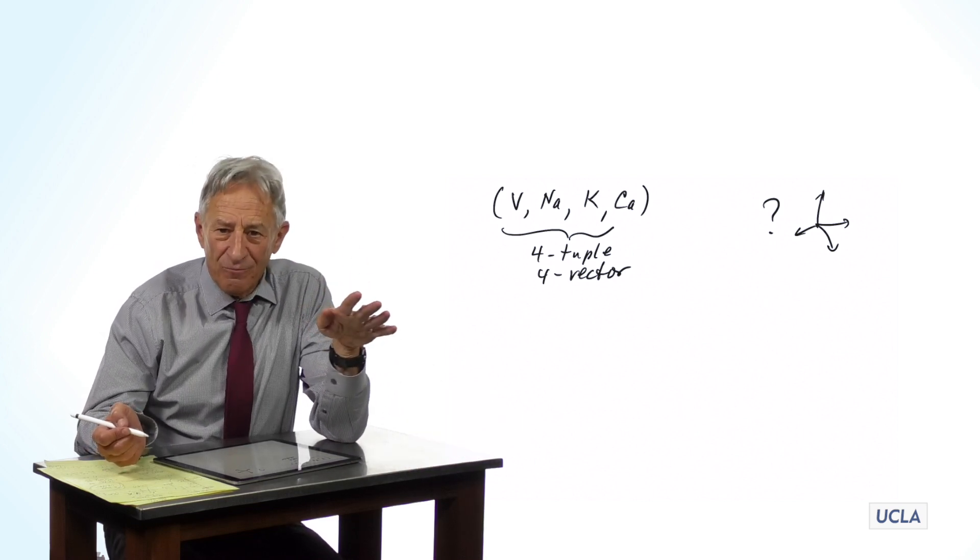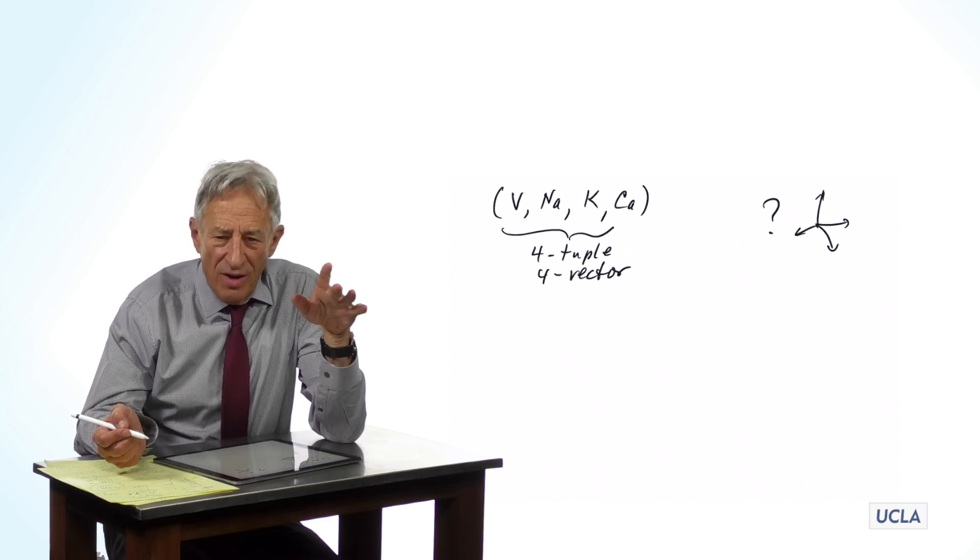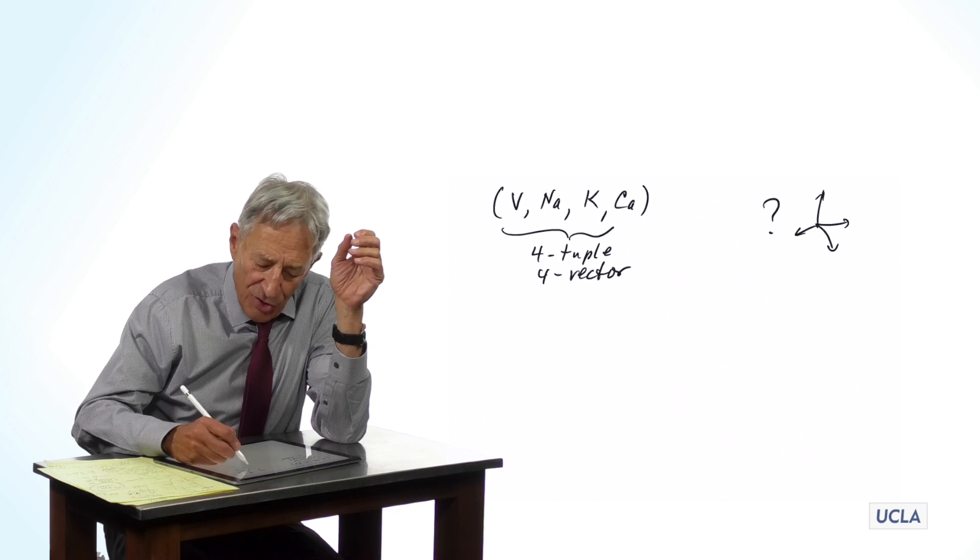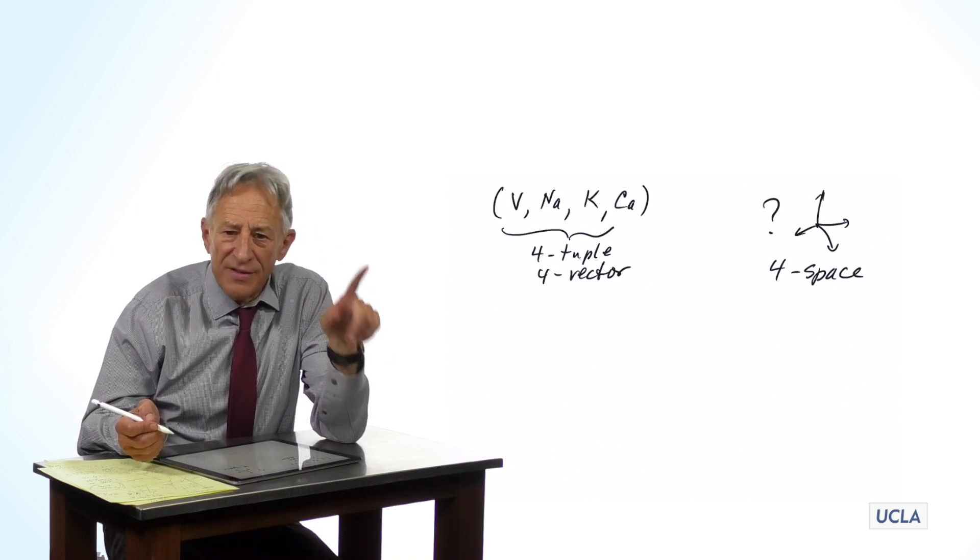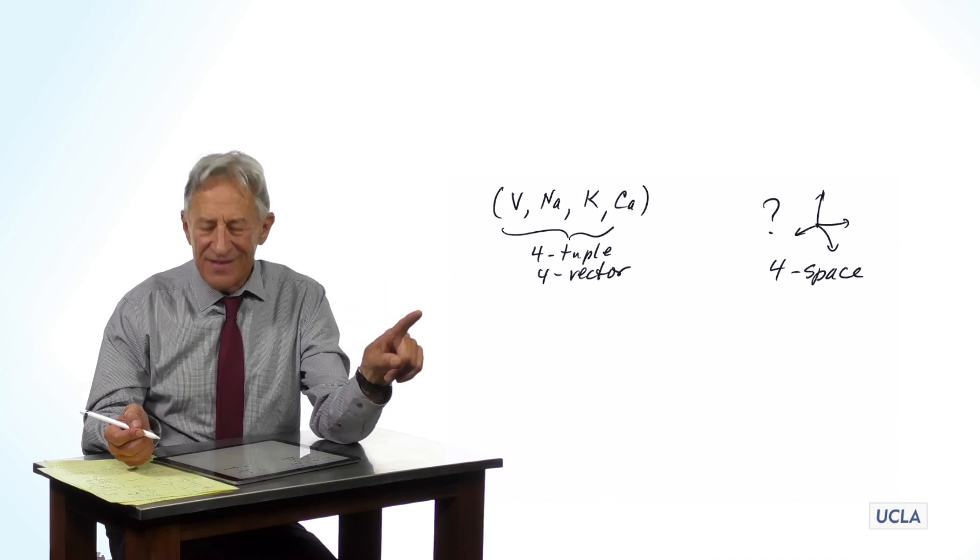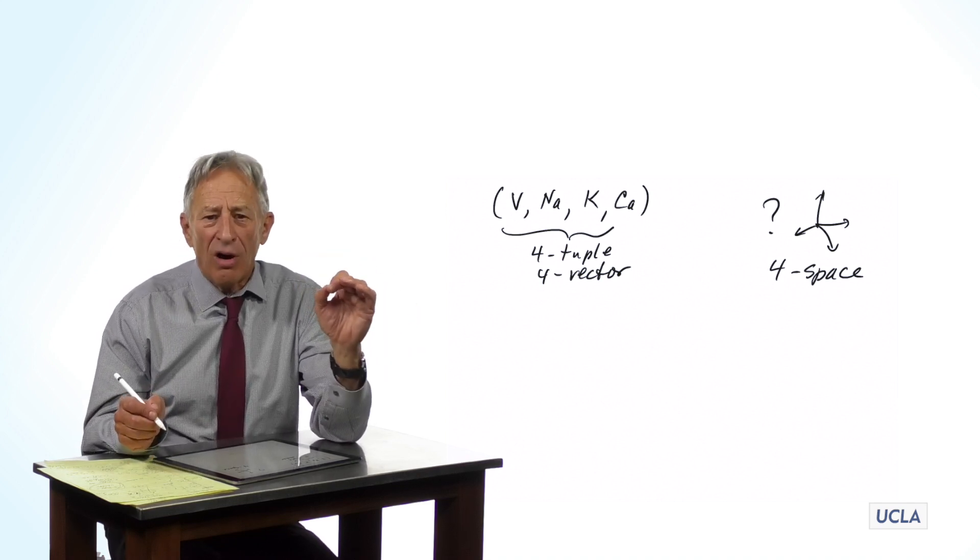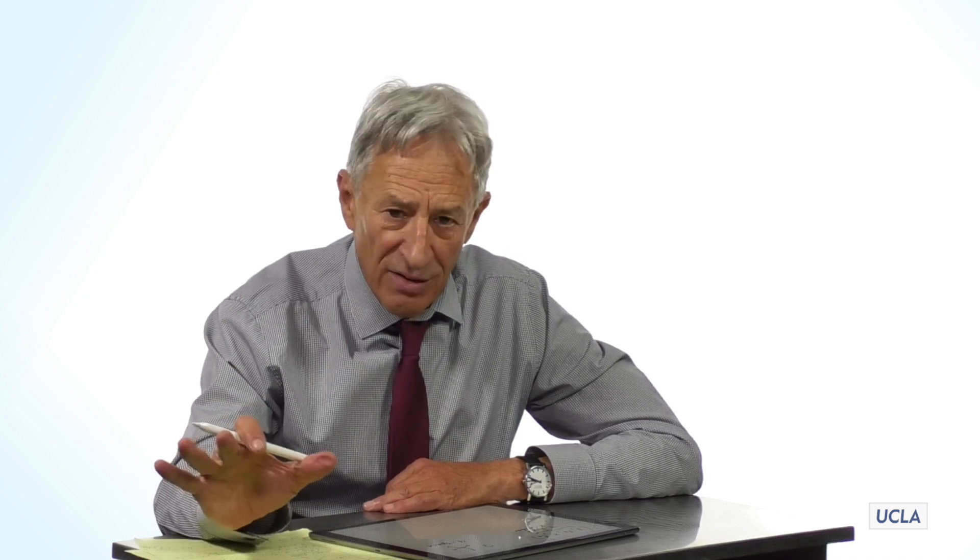But here is my point, and this is a really important point. Our inability to draw four-space is the only problem with it, is that human beings cannot draw them and cannot visualize them. There is nothing wrong with the concept of four-space. And we are going to operate with four-tuples and ten-tuples and twenty-five-tuples, just like we operate with one-tuples, two-tuples, and three-tuples. We just can't easily draw the result, but that's just a limitation on drawing. It is not going to hold us back mathematically at all,